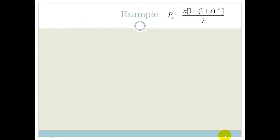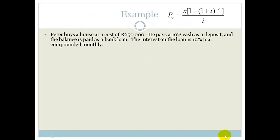So let's look at an example. Peter buys a house for a cost of 650,000 Rand. He pays 10% cash as a deposit. And the rest is paid as a bank loan. The interest on the loan is 12% per annum compounded monthly. And the question is, determine the monthly repayments if the loan is repaid over 20 years.